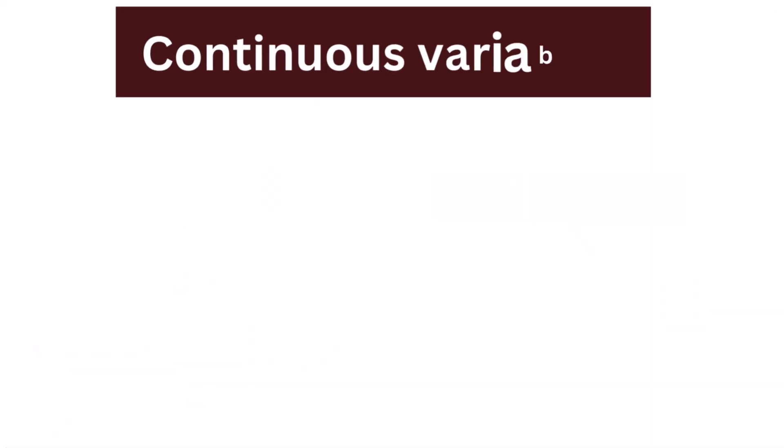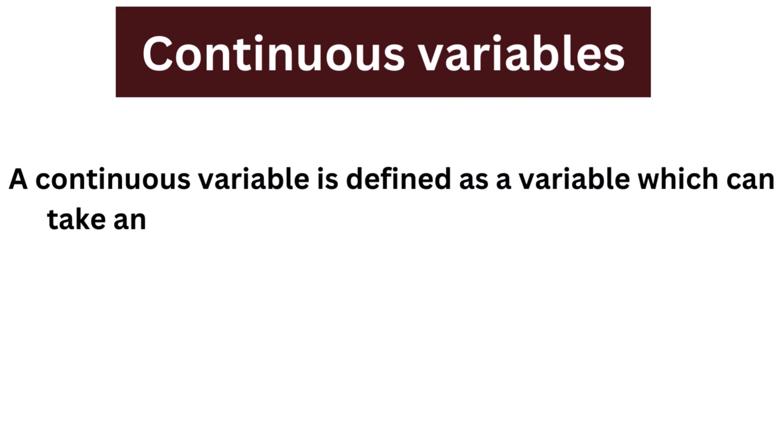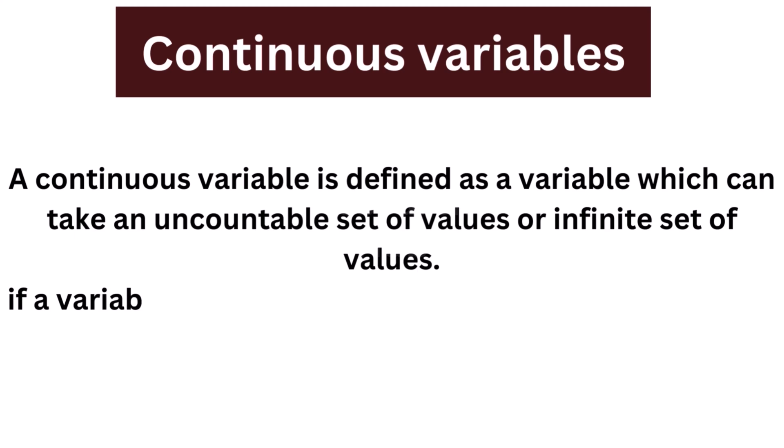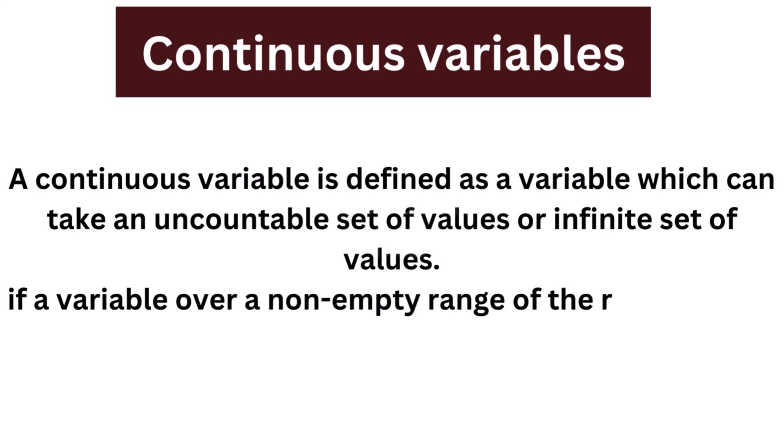What is meant by continuous variable? A continuous variable is defined as a variable which can take an uncountable set of values or infinite set of values. For instance, if a variable over a non-empty range of the real numbers is continuous,